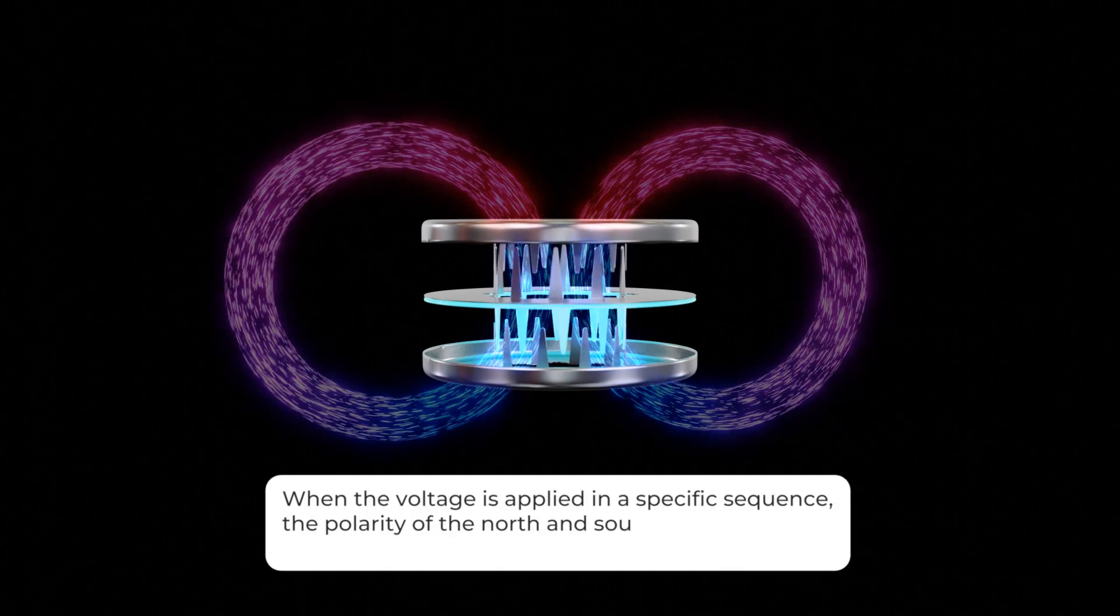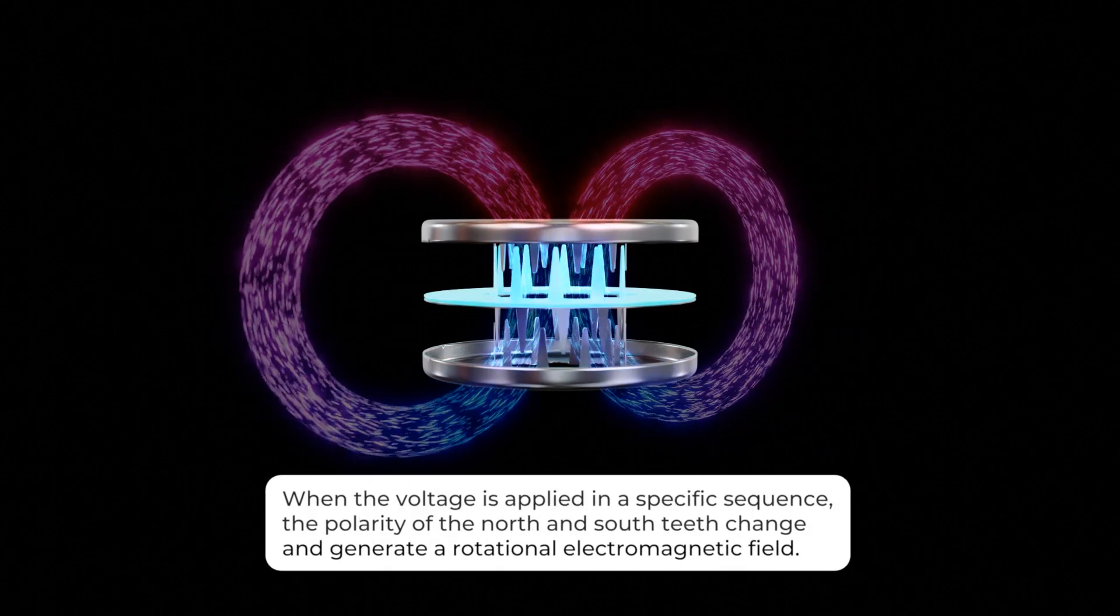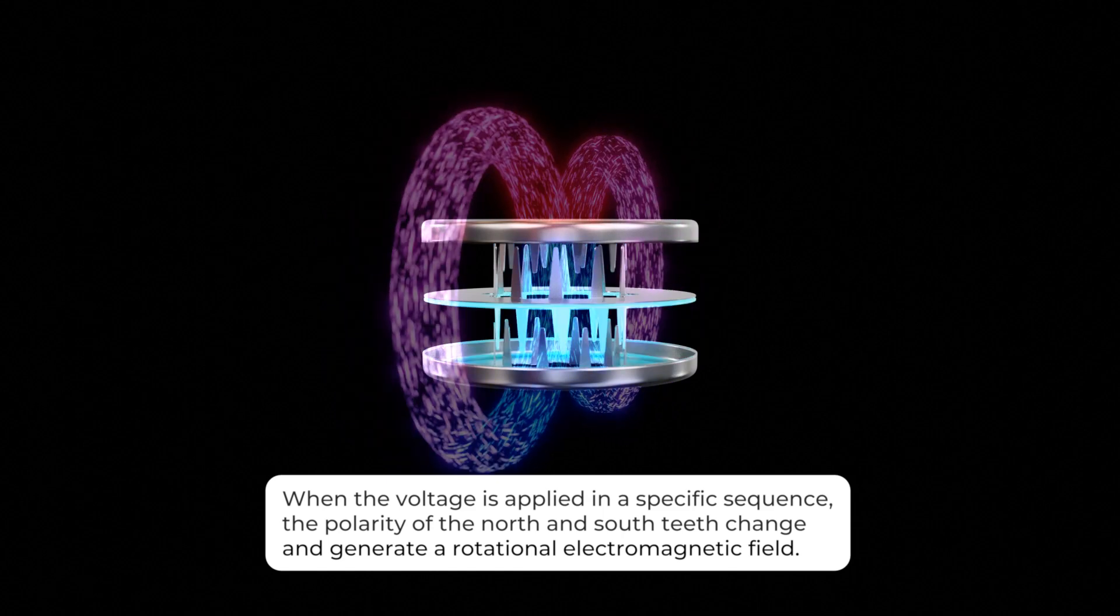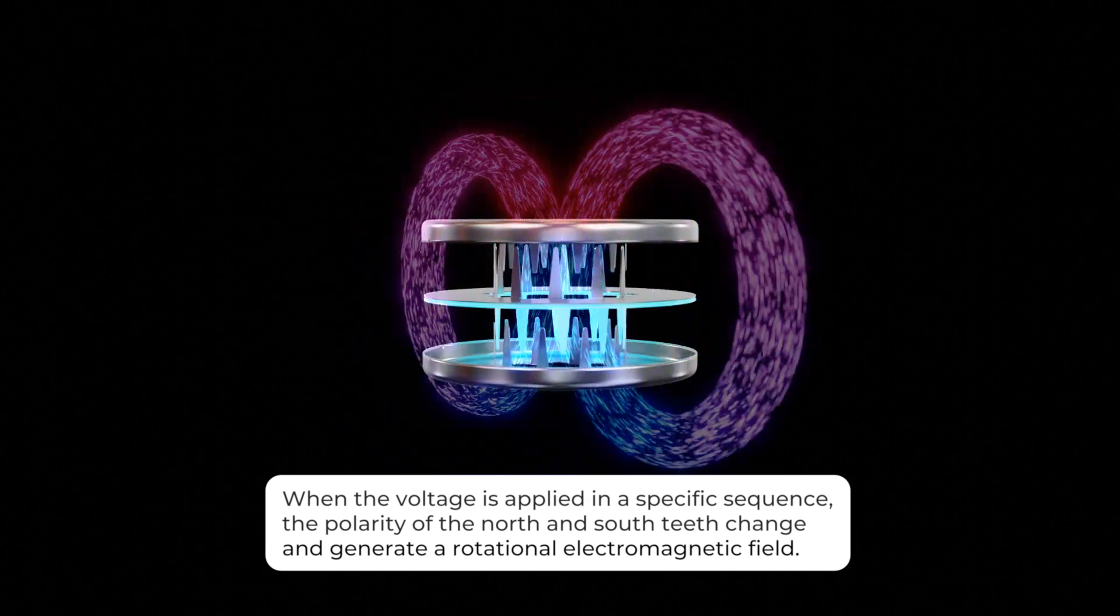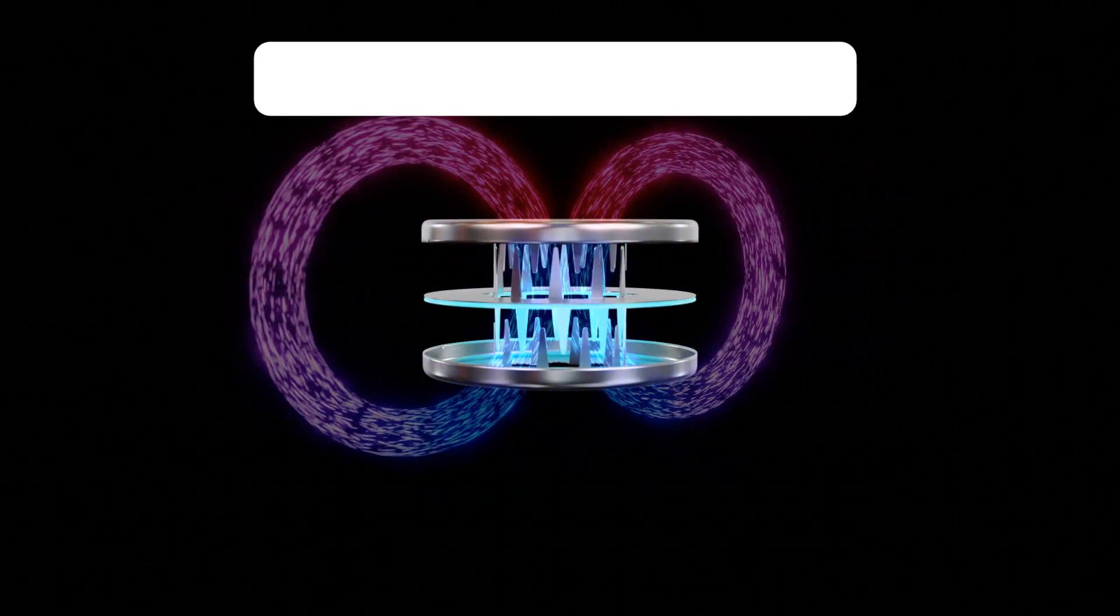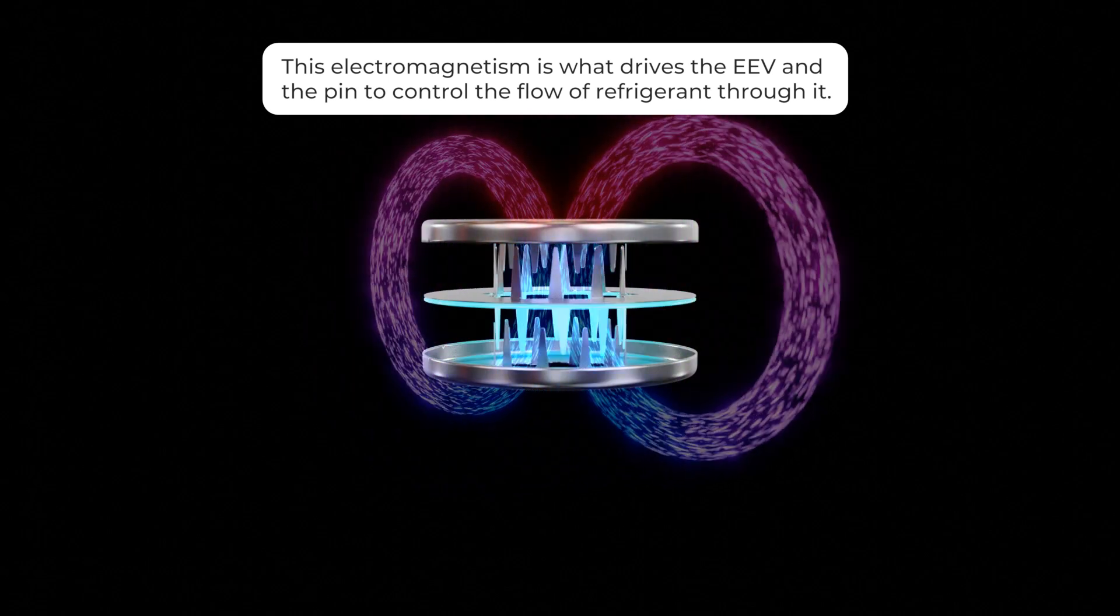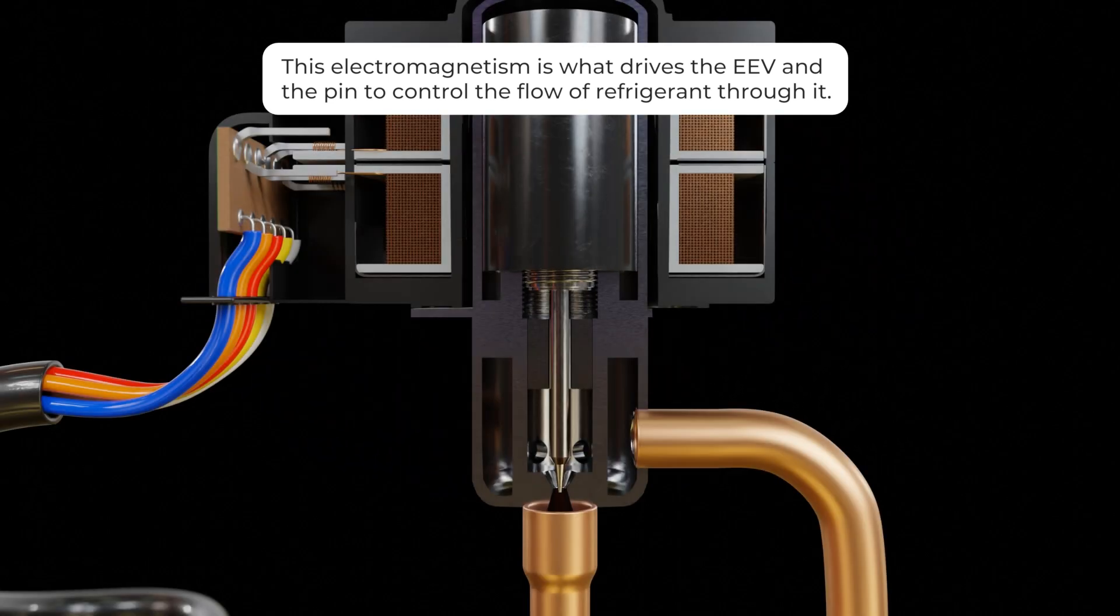Pulses from the board tell the EEV how much it needs to turn to raise or lower the pin. These pulses energize the windings in the coils which magnetize the iron teeth and assign a north and south polarity. When the voltage is applied in a specific sequence, the polarity of the north and south teeth change and generate a rotational electromagnetic field. This electromagnetism is what drives the EEV and the pin to control the flow of refrigerant through it.